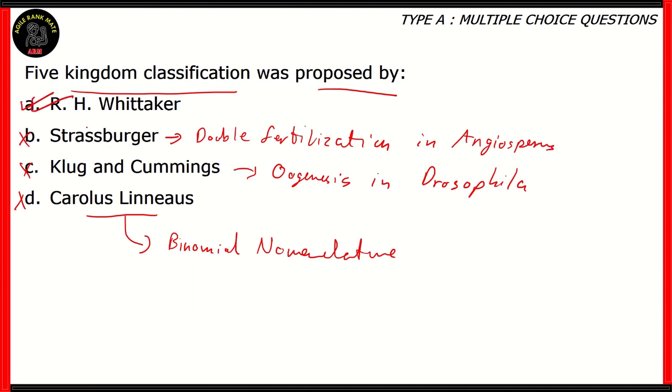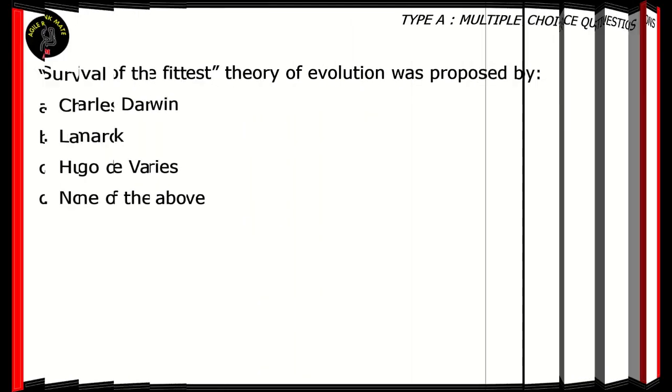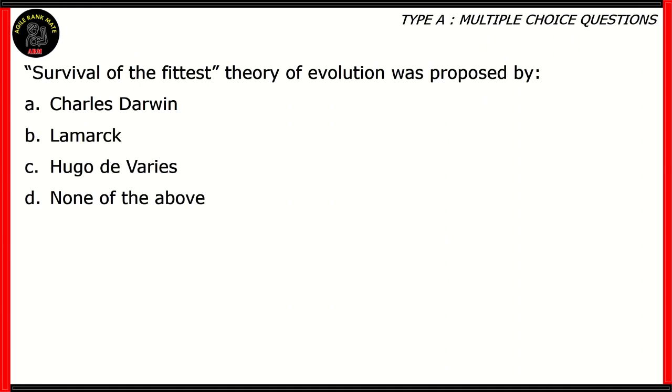The right answer is option A, R. H. Whittaker. He proposed the five kingdom classification consisting of monora, protista, fungi, plantae, and animalia. Now, the final question for today. Survival of the fittest theory of evolution was proposed by Darwin, Lamarck, Hugo de Varies, none of the above.